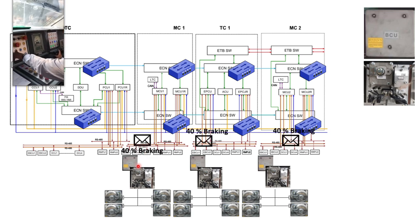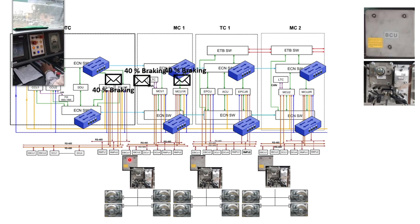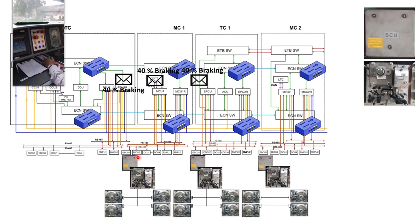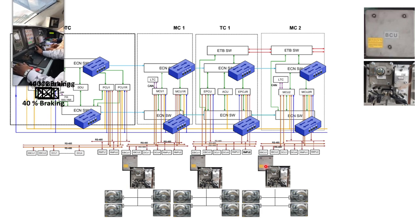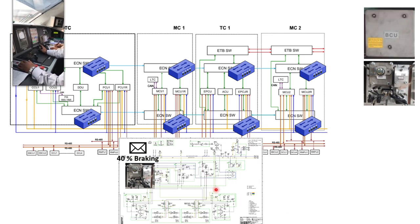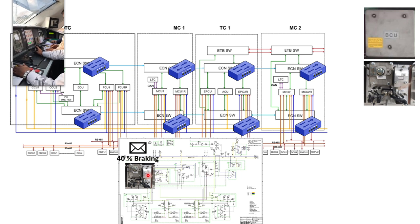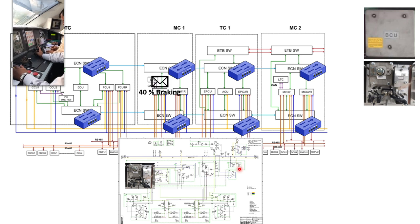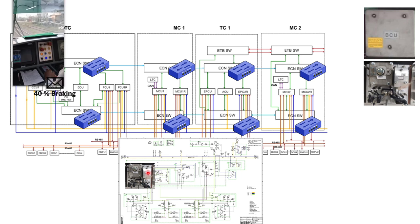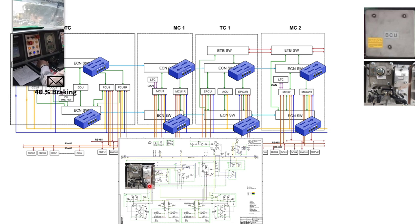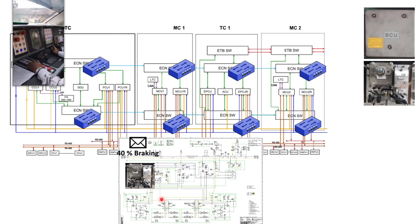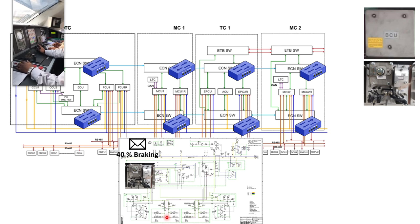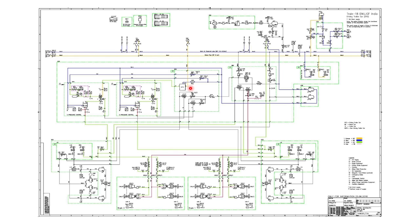TCMS is called the brain of the train and has a central role in coordinating different control and monitoring systems. Complex networking and switches route packets to all of the brake control units. So now all brake control units are aware that they need to apply 40% braking. What happens next is that the EP panel performs control, and the appropriate air pressure passes on to the brake calipers and wheels.